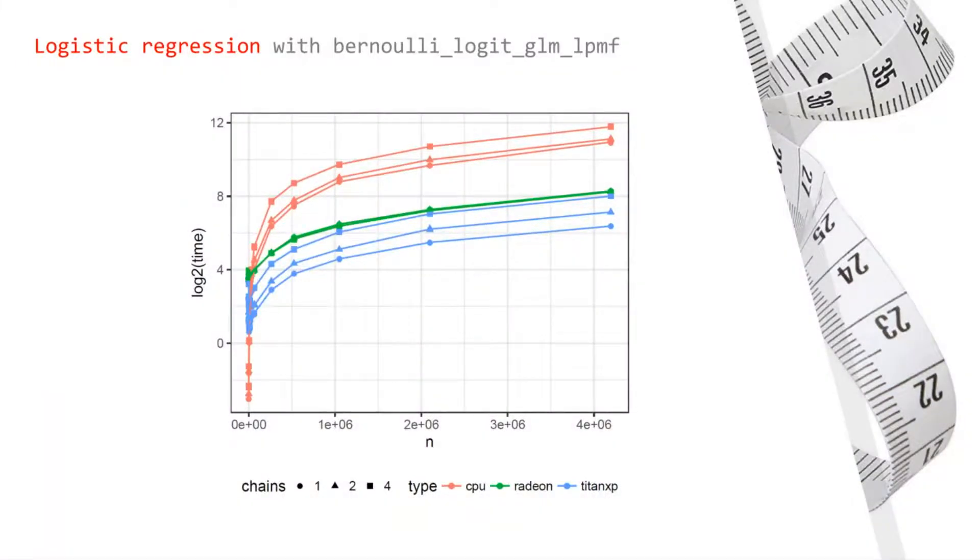On this slide, we have the log times from the same experiment, but this time we include the results for one, two, and four chains. These results demonstrate how running two chains in parallel is less than two times slower than running only one chain.